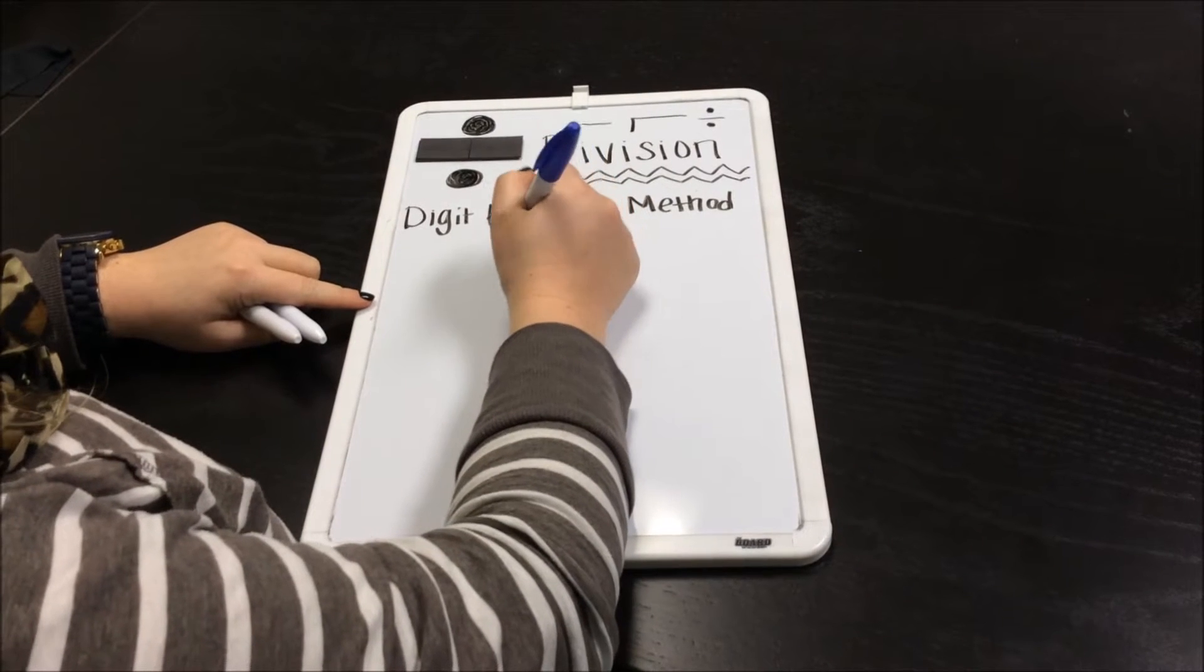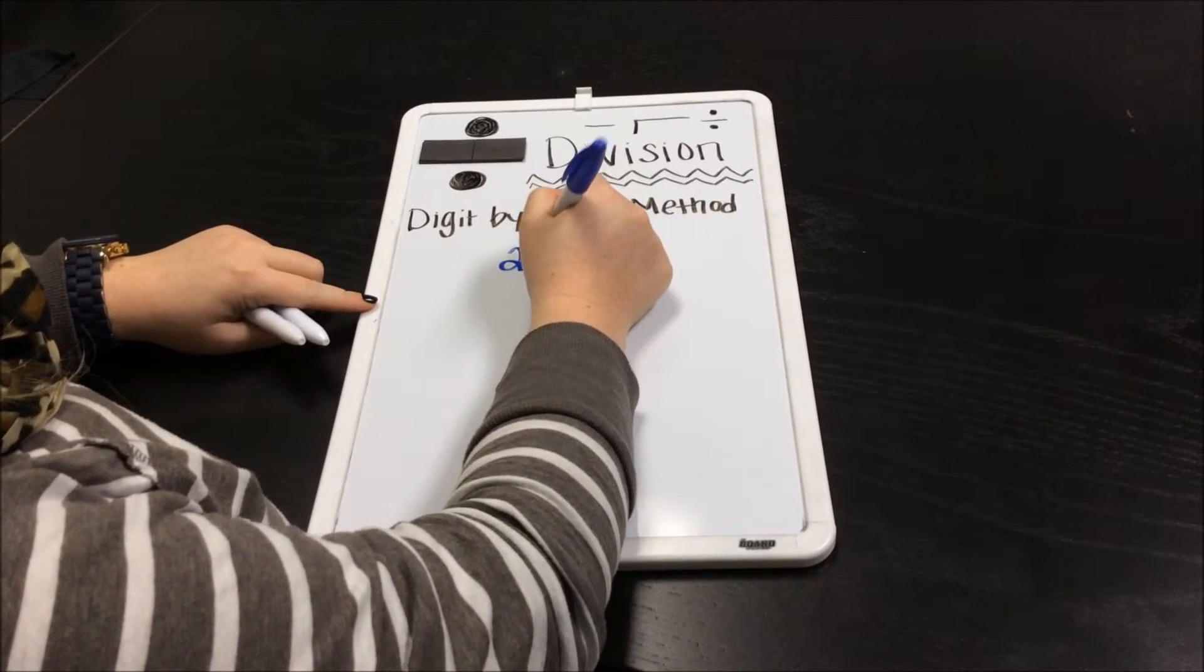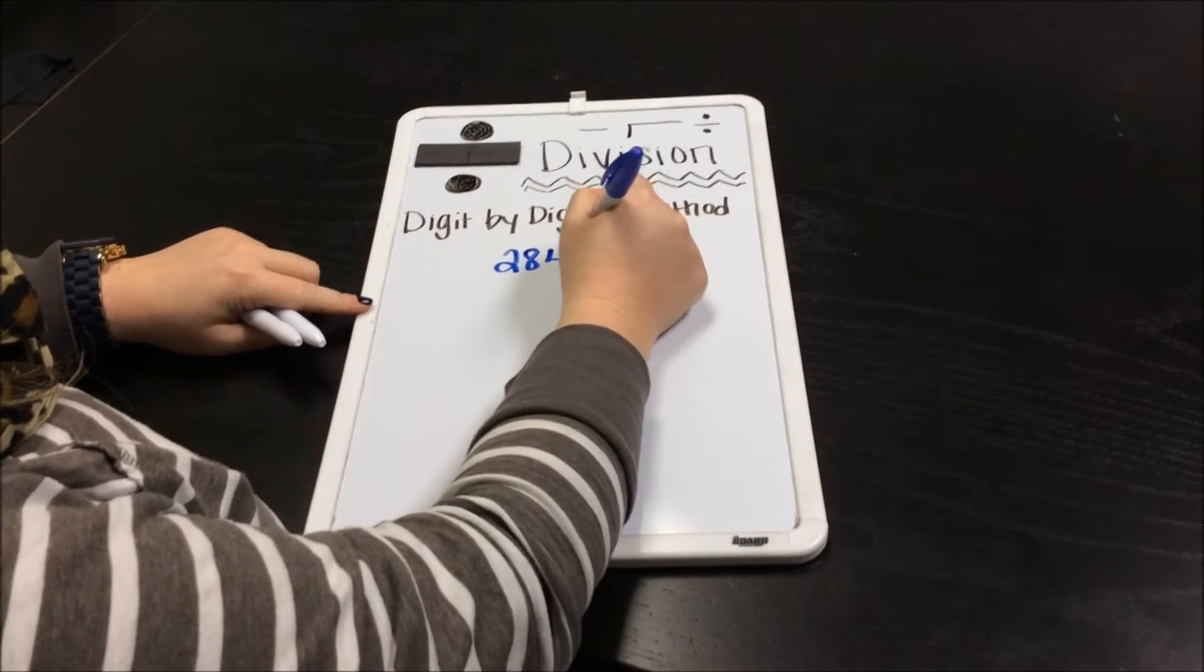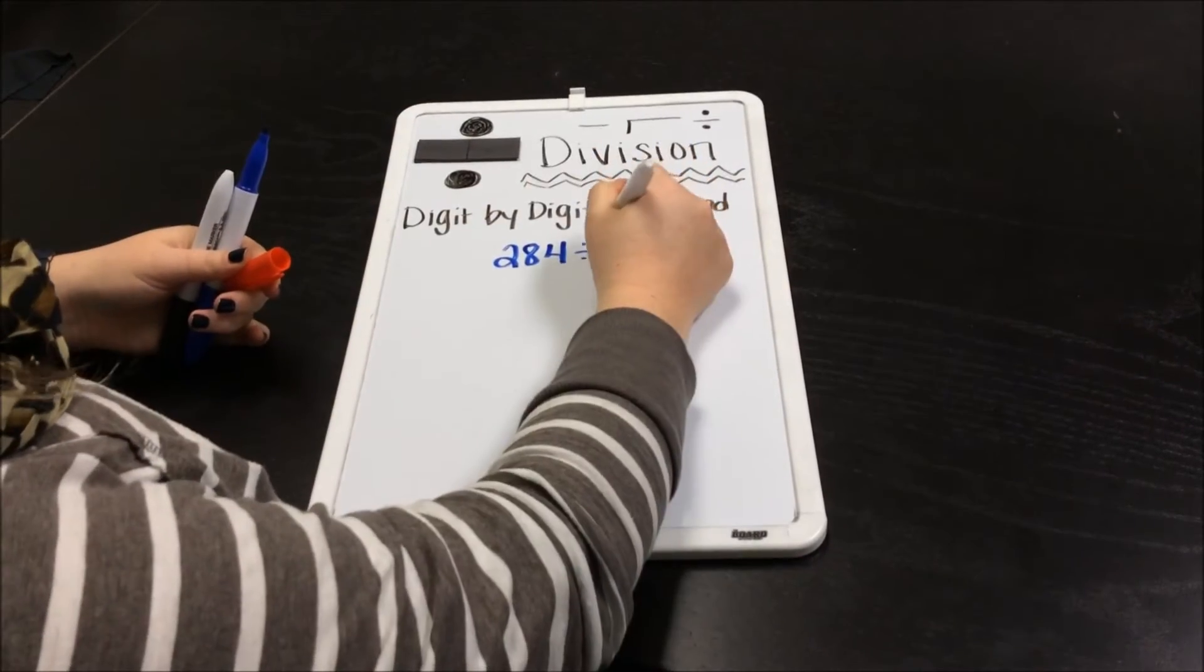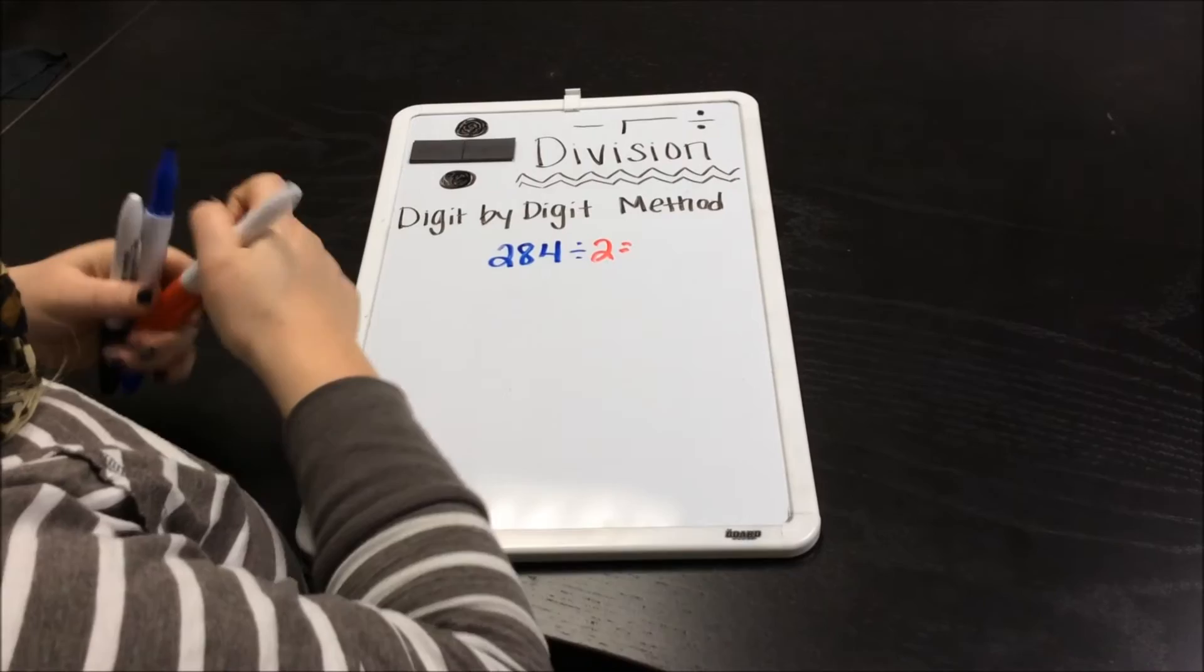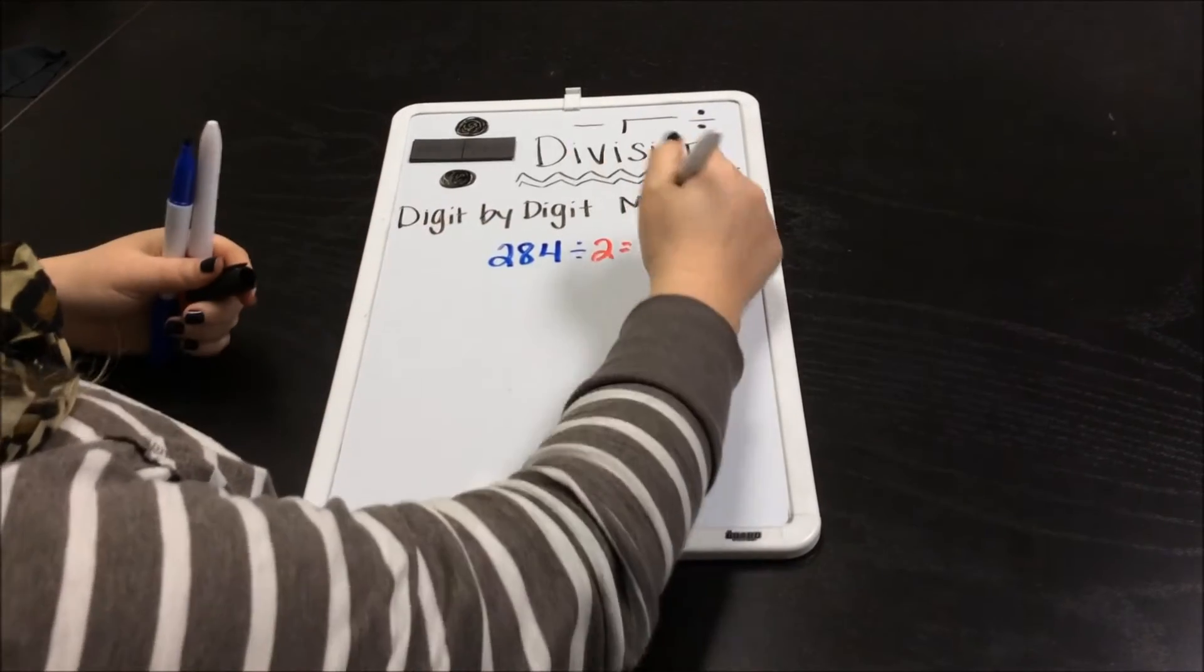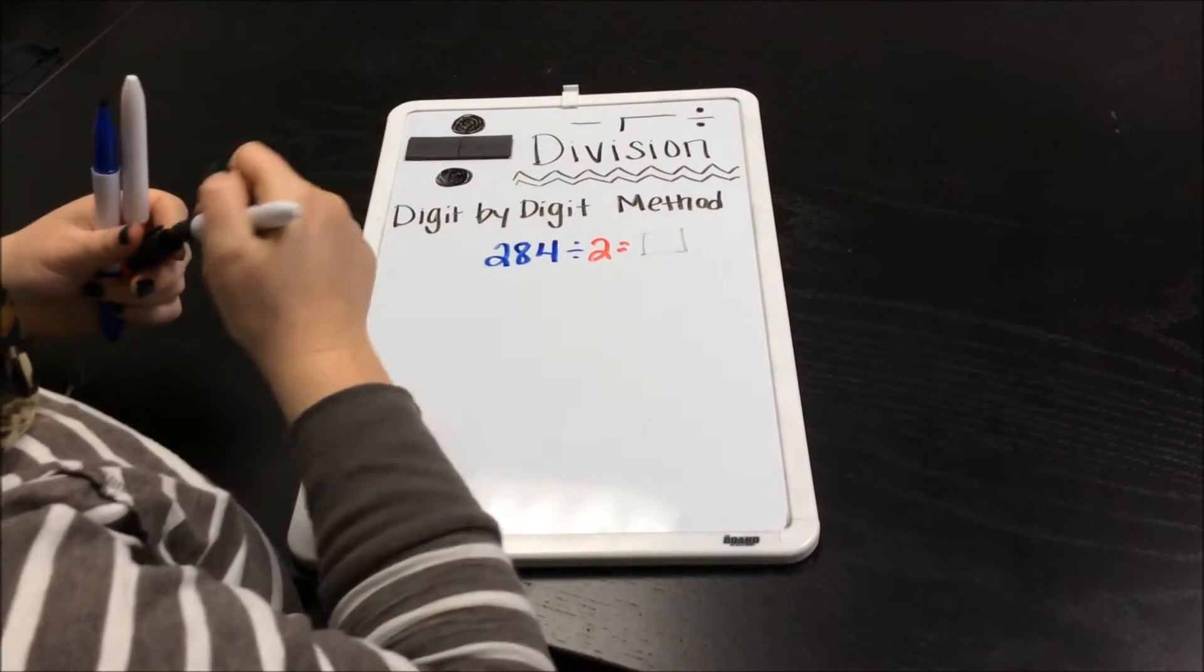We're going to be working with three-digit dividends. Today's number is going to be 284 divided by 2. Let's find our quotient using digit by digit, the digit by digit method.